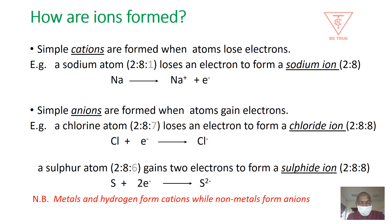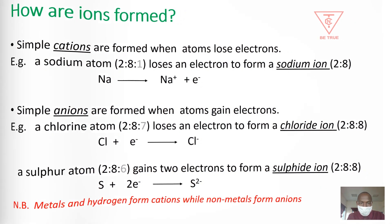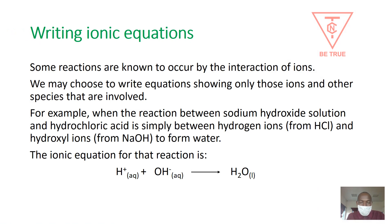Remember: metals and hydrogen will form cations, but non-metals will form anions. This is because metals and hydrogen atoms become stable by losing electrons, so they form positive ions. Non-metals become stable by gaining electrons, and they form anions.